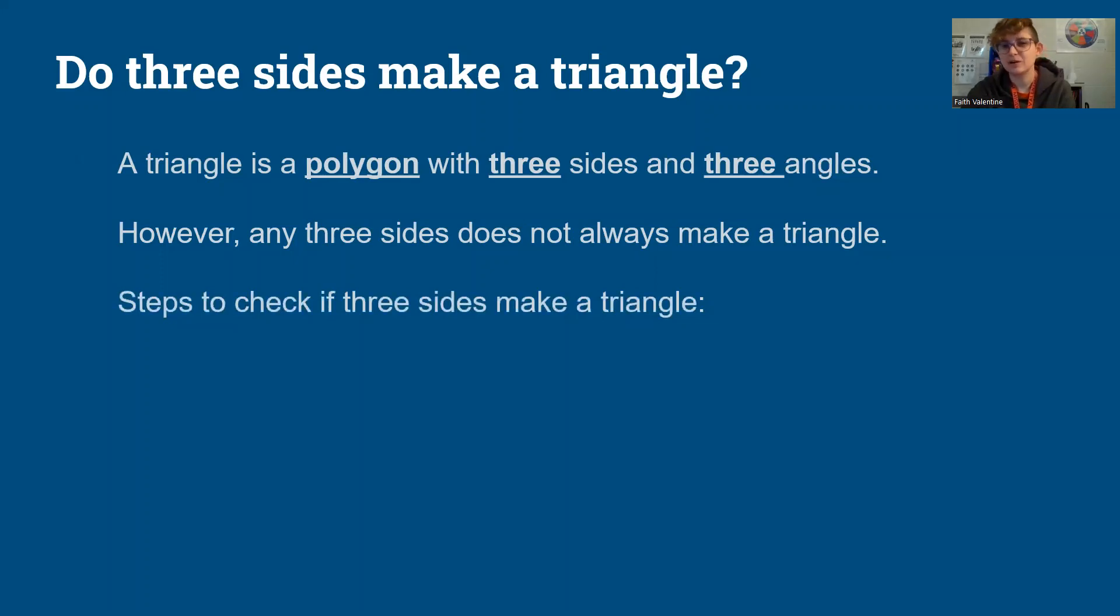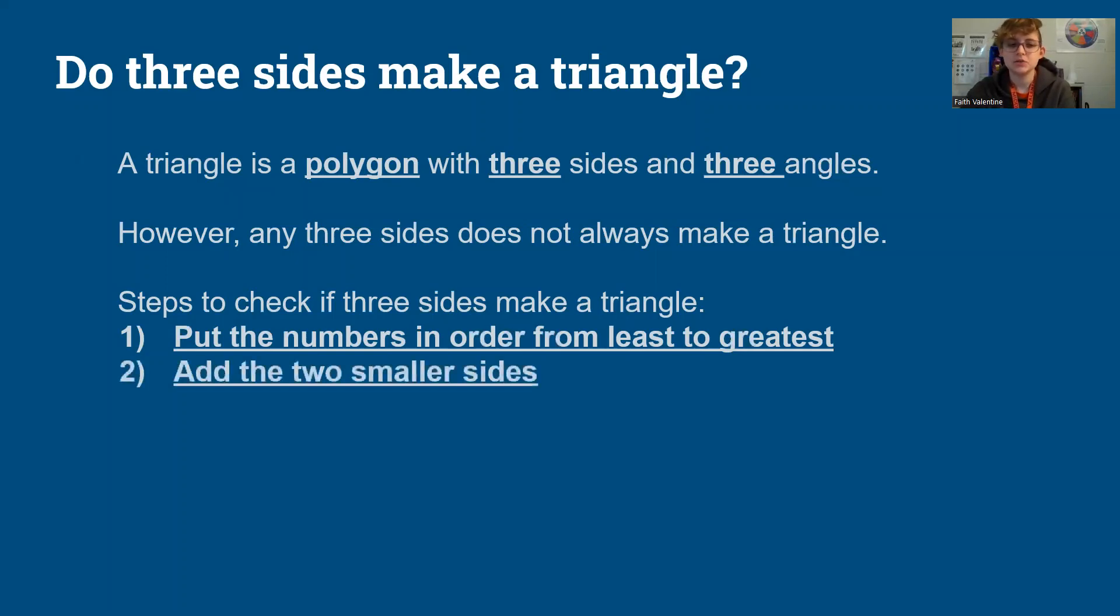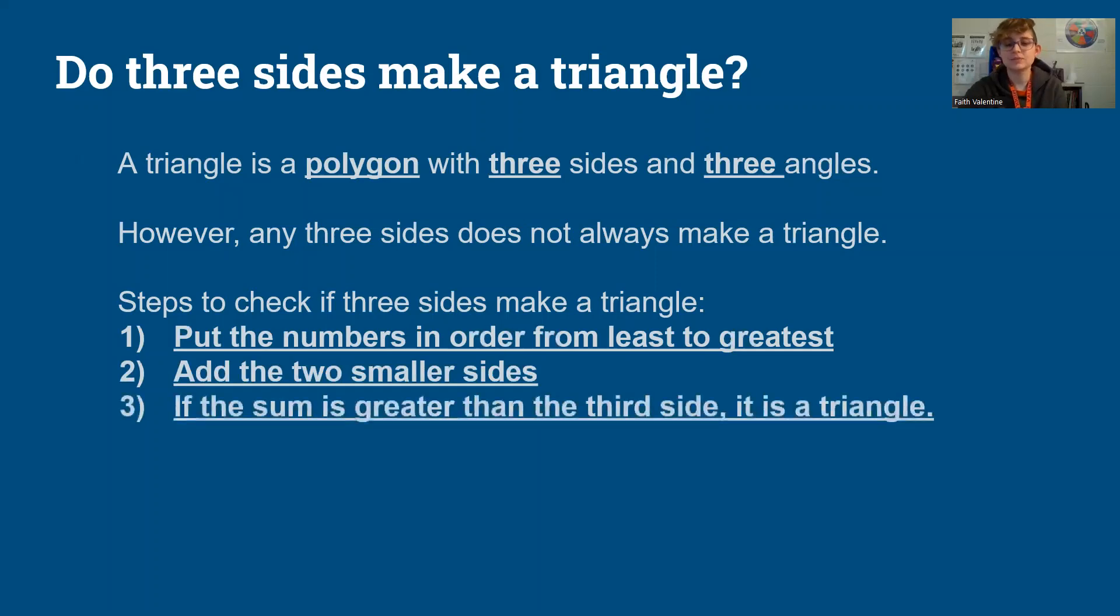There's three steps that we can go through to check. The first is to put the numbers in order from least to greatest. This one is not necessary and as you become more familiar with the steps you won't need this one. Step two, add the two small sides. Step three, if the sum is greater than the third side we make a triangle.